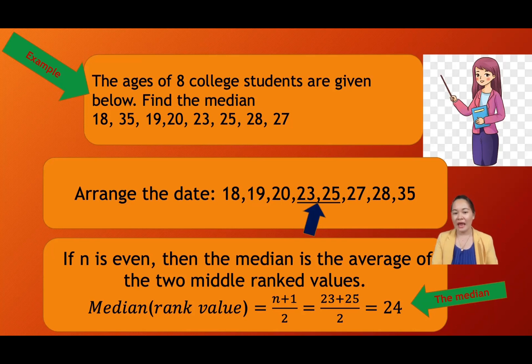This is ordinal data. 18, 19, 20, 23, 25, 27, 28, and 35. You arrange the data since that is eight.